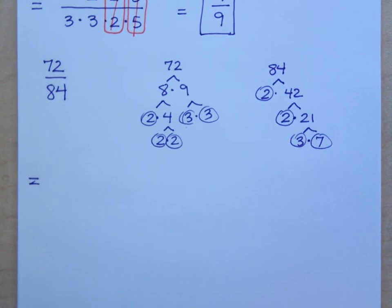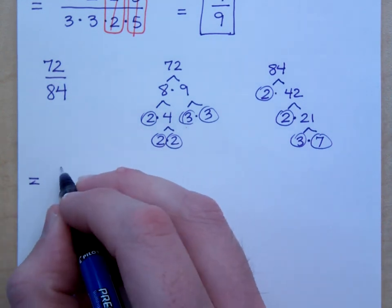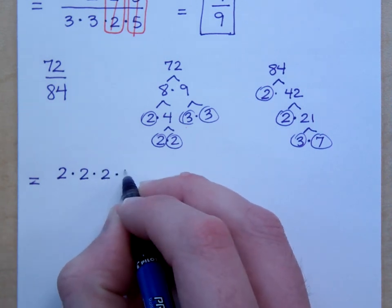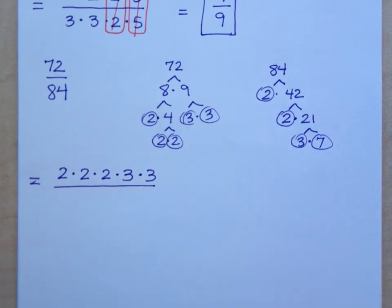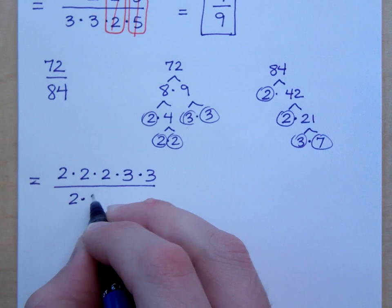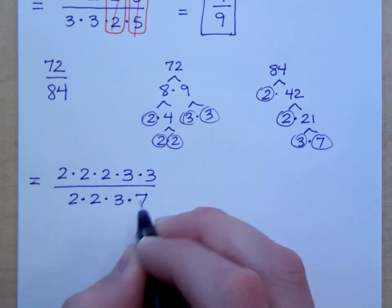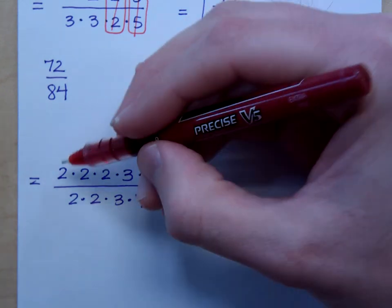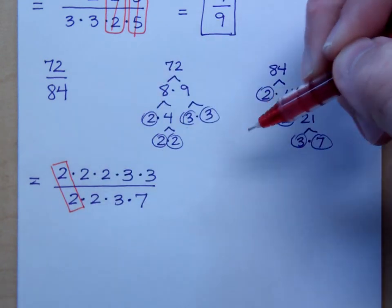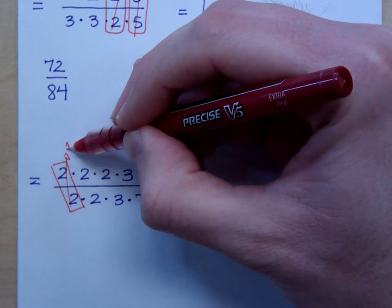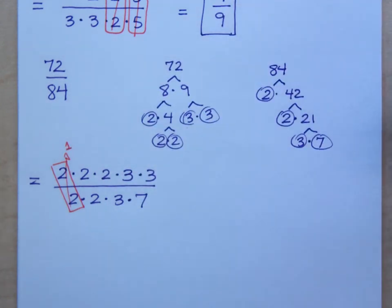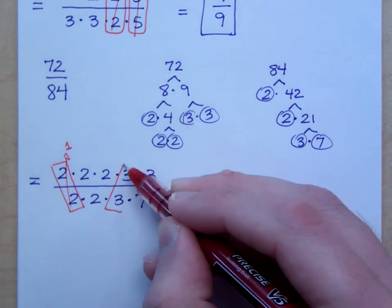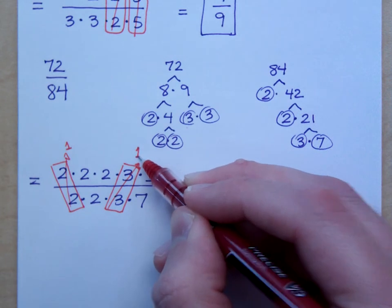72 gets rewritten how? How many factors of 2 do I have? I have 3 factors of 2. 2 factors of 3. Over 84, that's 2 times 2 times 3 times 7. So how could I reduce it this way when I'm looking at the prime factorization? Do you see this pair of 2s right here? So these guys reduce to give me a factor of 1. What else can reduce? 3. There's a common factor of 3 right here, so that also gives me a factor of 1. Is there anything else?